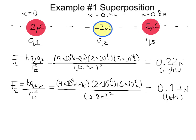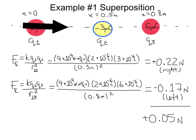Now let's define the positive direction as being to the right and the negative direction as being to the left. So we call this positive 0.22 newtons and negative 0.17 newtons. The net force on Q1 due to Q2 and Q3 together is the sum of these, or 0.05 newtons positive — meaning to the right. Thus our two microcoulomb charge will accelerate to the right and feel a net force of 0.05 newtons.